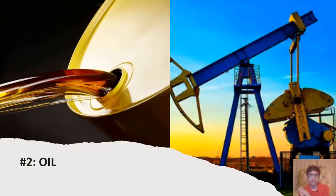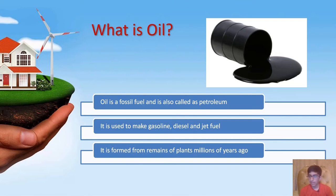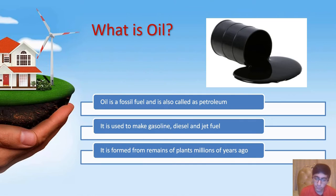The second type of non-renewable energy resource is oil. Oil is basically a fossil fuel and is also called petroleum. It is used to make different products after being refined, because the oil we get from below the earth's surface is crude oil, which is not ready to use. We need to first refine it to produce products such as gasoline, diesel, and jet fuel. This oil is formed from the remains of tiny sea plants and animals from millions of years ago.